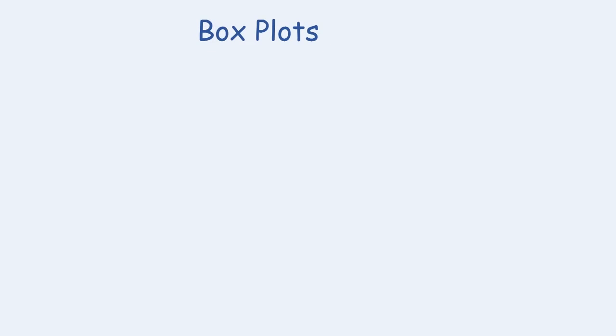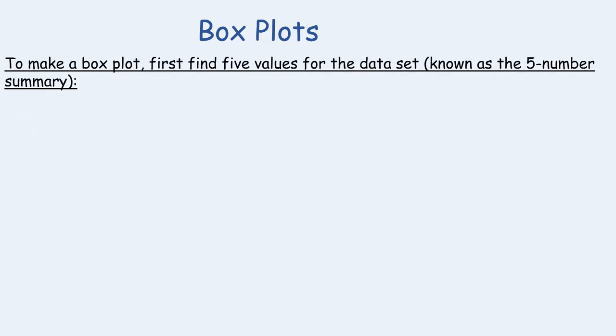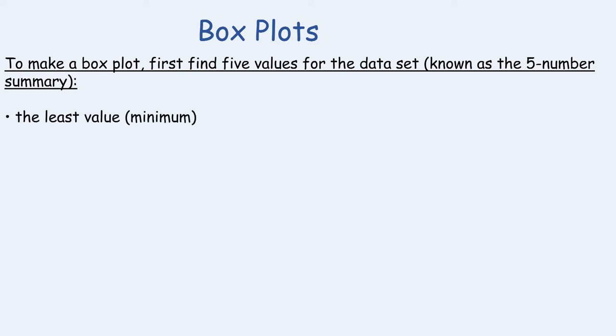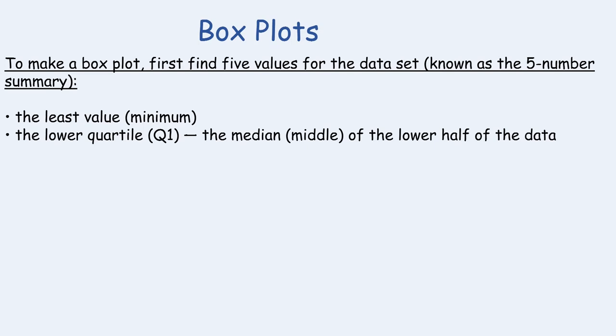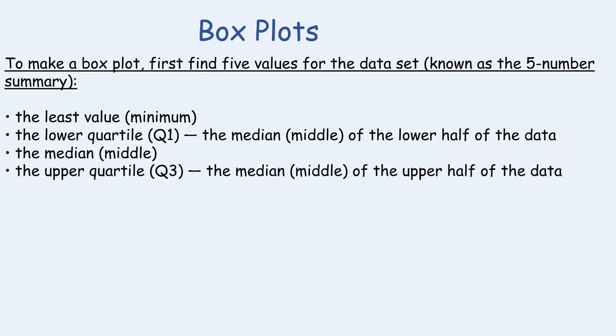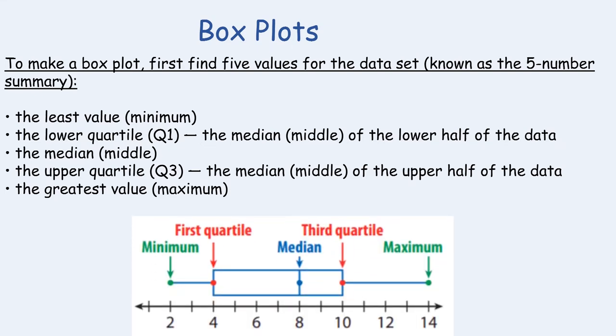In order to make a box plot, first find the five values for the data set — also known as the five-number summary. Those values are: the least value (minimum), the lower quartile Q1 which is the median of the lower half of data, the median (the middle), the upper quartile Q3 which is the median of the upper half of data, and the greatest value (maximum). This image highlights the five-number summary — I'll give you a moment to take a look.